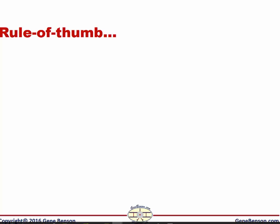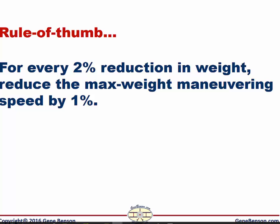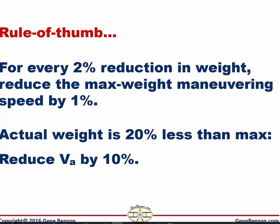We can go a bit easier on the math and use a rule of thumb which will be close enough. The rule of thumb is that for every 2% reduction in the aircraft weight below the maximum allowable weight, we should reduce our maneuvering speed by 1%. So if our actual weight is 20% below the maximum allowable weight, we should reduce our maneuvering speed by 10%.